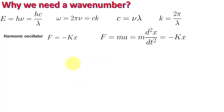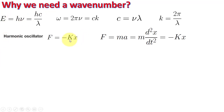To understand why FTIR uses wave number, we use the harmonic oscillator equation, because IR spectra represent atomic excitations inside a molecule. Inside a molecule, atoms are attached to each other like two masses connected by a spring, so we use F = −kx, where k is the spring constant.